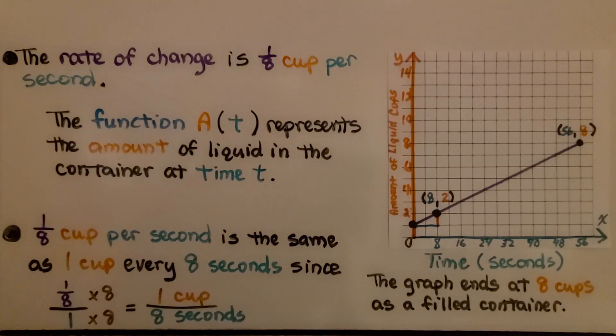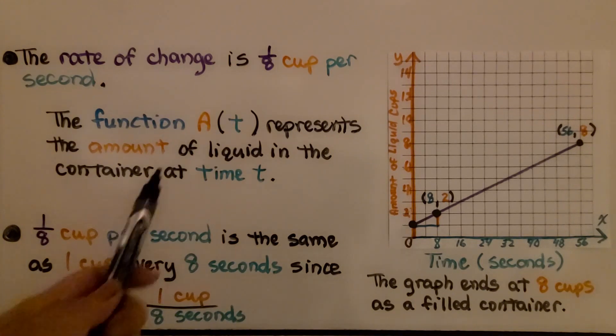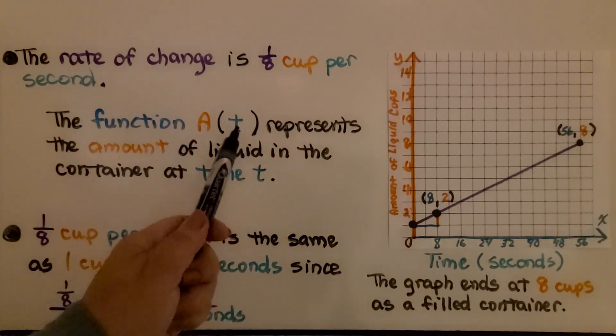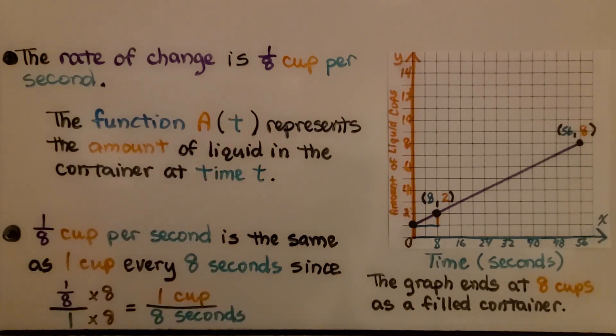The rate of change is 1/8th cup per second. The function A(t) represents the amount of liquid in the container at time t. 1/8th cup per second is the same as 1 cup every 8 seconds, since 1/8 over 1, if we multiply the numerator and denominator by 8, gives us 1 cup over 8 seconds. The graph ends at 8 cups as a filled container.